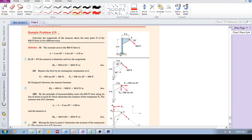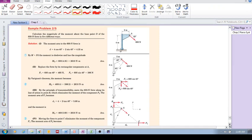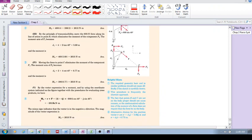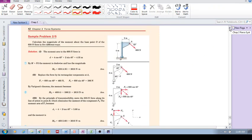Okay, let's do a nice example. Sample problem 2.5. It says calculate the magnitude of the moment about the base point of the 600 Newton force in five different ways. I'm going to do the first four in this video and then do number five in a separate video because number five is on using the cross product, and I feel that needs quite a bit of attention.